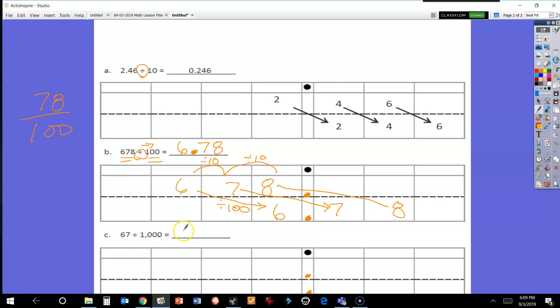For problem C, similar: now we have 67, and we know we're dividing, so it's going to get smaller. Make sure you line that number up in the correct place value slots. We have 6 tens and 7 ones. Now I'm going to move over: I'm dividing by 1,000, so I'm dividing by 10, then dividing by 10 again, then dividing by 10 again, which is the same thing as dividing by 1,000. This 6 is going to move over one, two, three slots and end up right here.